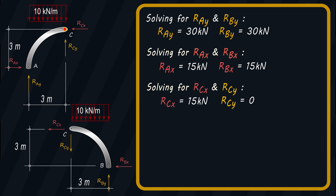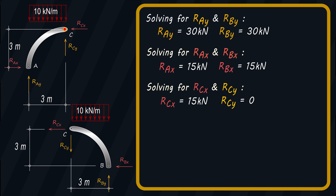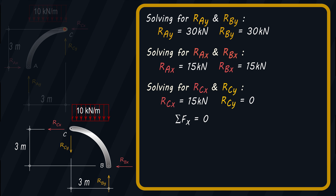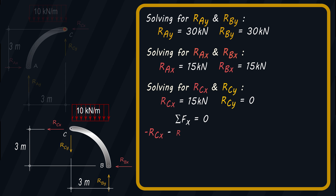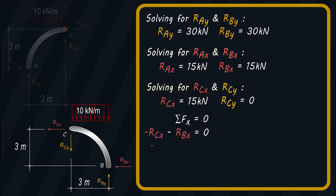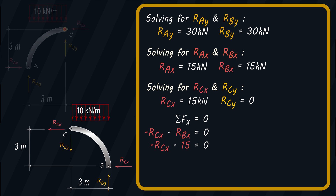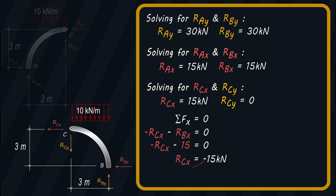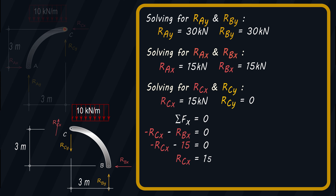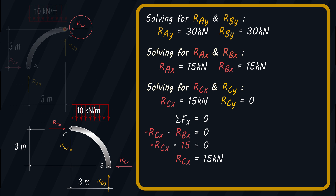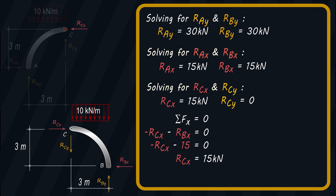To check, using the free body diagram for member BC and summing forces along X equals zero, we have: negative RCX minus RBX equals zero. Substituting RBX equal to 15 kN and solving for RCX, we get negative 15 kN. This means we need to change our assumed direction in the free body diagram for member BC. Comparing with the free body diagram for member AC, Newton's third law still governs. So RCX is equal to 15 kN.